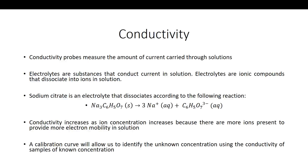More specifically, not only can we measure conductivity, but the amount of conductivity increases as the concentration of sodium citrate increases. This allows us to generate a calibration curve where we plot conductivity on the y-axis and concentration on the x-axis. We can then measure the conductivity of the unknown and, using y = mx + b, solve for the concentration.